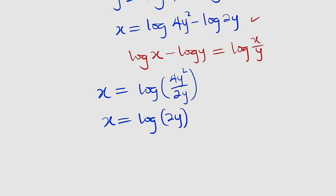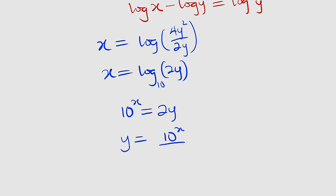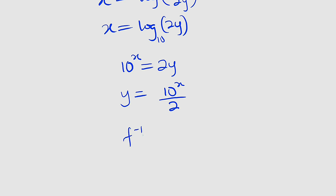From here we can solve for y. Remember that any log without an assigned base is base 10. Therefore, naturally this has a base 10. So we can directly say that 10 raised to the power of x is equal to 2y. Now we divide both sides by the coefficient of y. Y is equal to 10 to the power of x divided by 2. And finally, we replace y with f inverse of x. Therefore, our inverse function is equal to 10 to the power of x divided by 2.